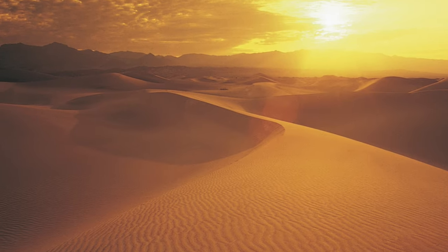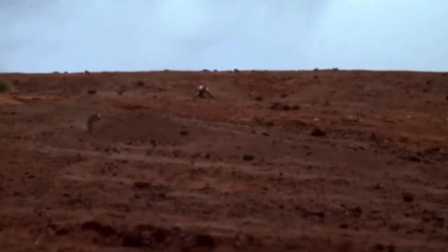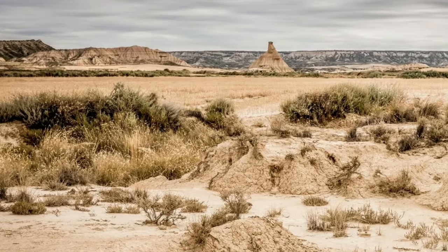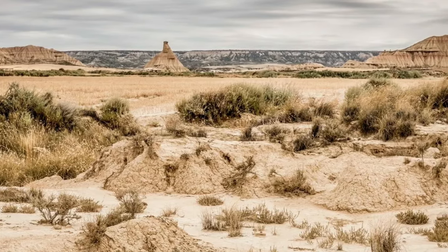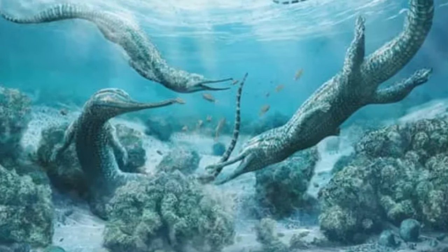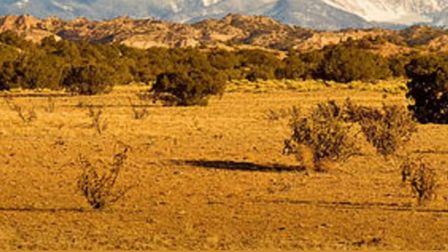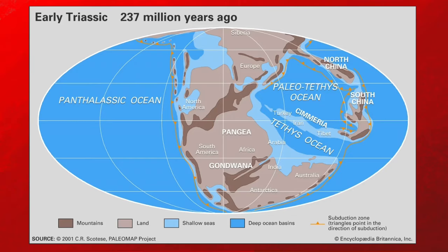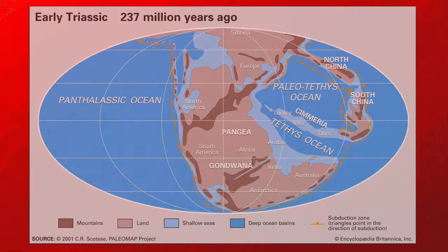The preceding Permian-Triassic mass extinction had really taken its toll on the climate of the world, and these effects would be felt well into the Triassic. For the majority of the Triassic, the climate on land was very hot and dry, reaching temperatures ranging from 50 to 60 degrees Celsius or 122 to 140 Fahrenheit. The seas were slightly cooler, reaching around 40 degrees Celsius or 104 Fahrenheit. The land was mostly dominated by harsh deserts, in part because all of the landmasses on Earth were joined together into one big supercontinent called Pangaea, which prevented rainwater from reaching the center of the supercontinent. Almost entirely encircled by eastern Pangaea were the Paleotethys and Tethys oceans, while the remainder of the globe was covered by the Panthalassic Ocean.